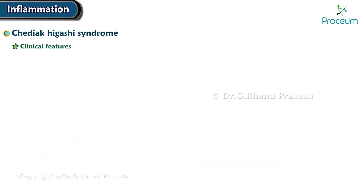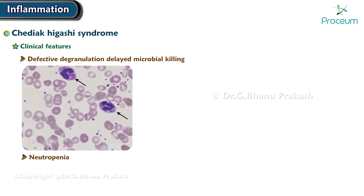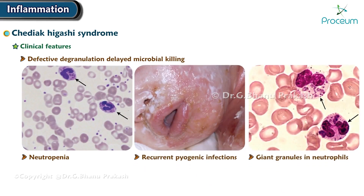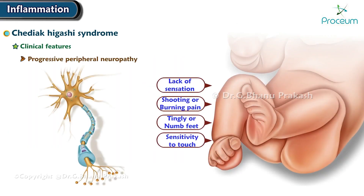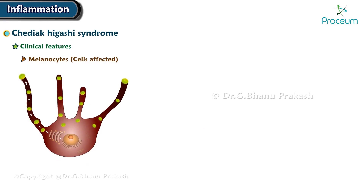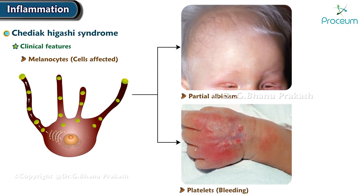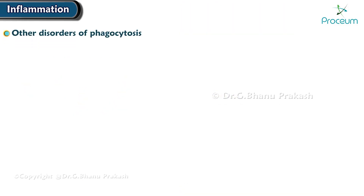Clinical features of Chediak-Higashi syndrome include defective degranulation delaying microbial killing, neutropenia, recurrent pyogenic infections, giant granules in neutrophils, progressive peripheral neuropathy, and involvement of melanocytes leading to partial albinism, as well as platelet dysfunction causing bleeding.